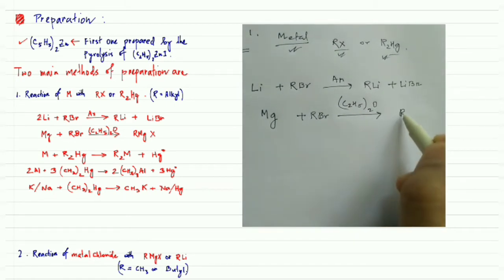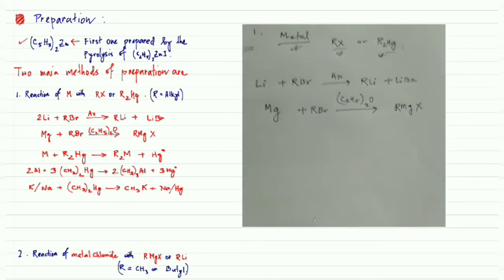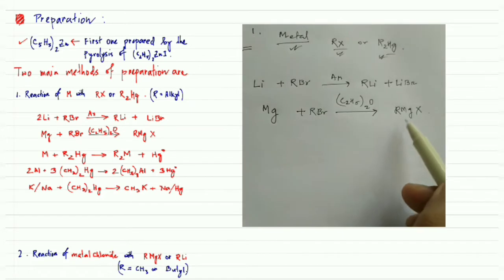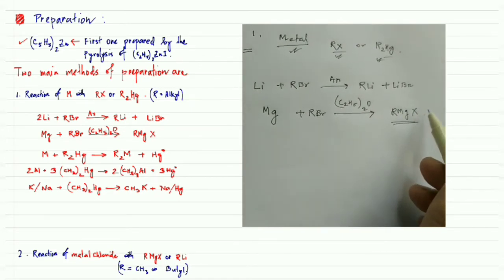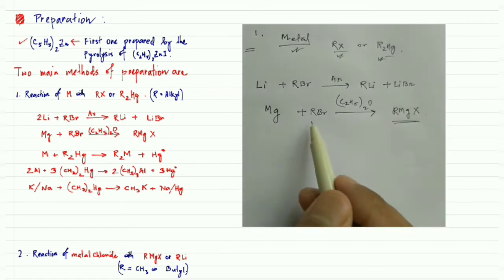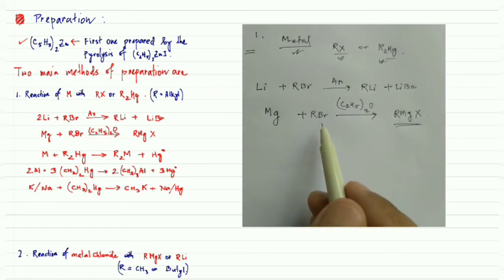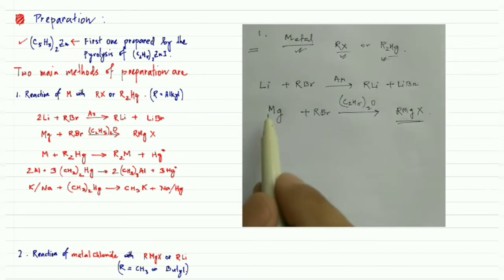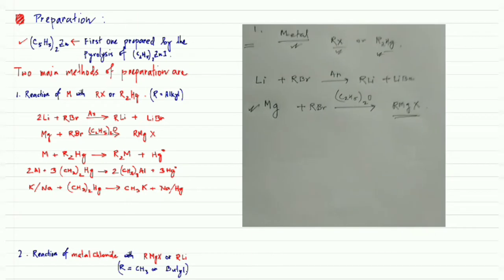Magnesium reacts with alkyl halide to form the Grignard reagent (RMgX). This is a very important example of the first method of preparation of organometallic compounds.